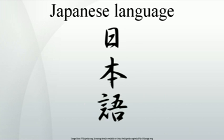Modern Japanese is written in a mixture of three main systems: kanji (characters of Chinese origin), and two syllabaries, hiragana and katakana. The Latin script is also sometimes used, mostly in acronyms. Arabic numerals are more common than kanji when used in counting, but kanji numerals are still used in compounds. Hiragana are used for words without kanji representation, for words no longer written in kanji, and also following kanji to show conjugational endings. Because of the way verbs and adjectives in Japanese are conjugated, kanji alone cannot fully convey Japanese tense and mood. Hiragana used in this way are called okurigana.